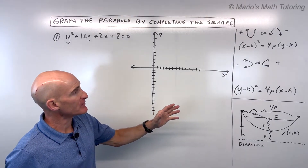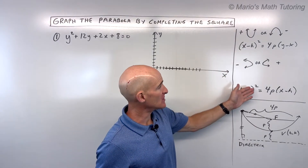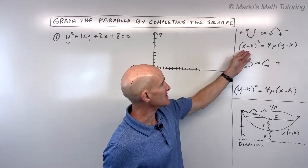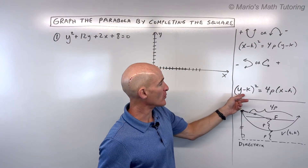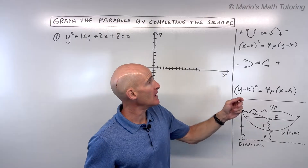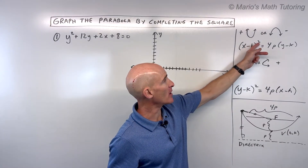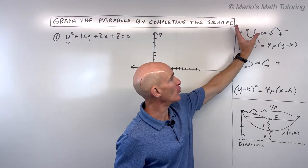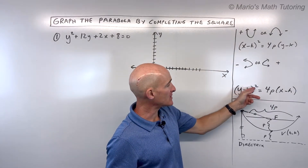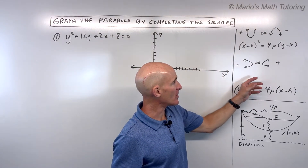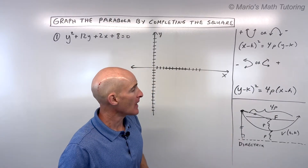The first thing we want to analyze is the different forms of the equation of a parabola. It's either going to be in the (x − h)² form or the (y − k)² form. If the x term is squared, the parabola opens up or down. If the y term is squared, it opens to the left or the right.